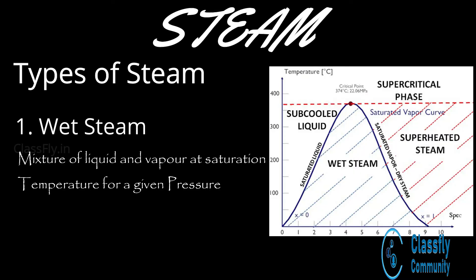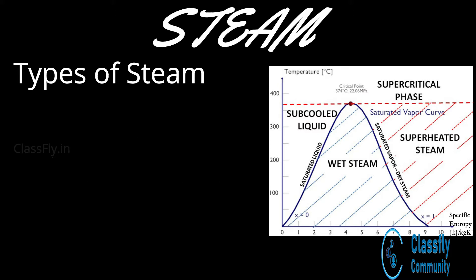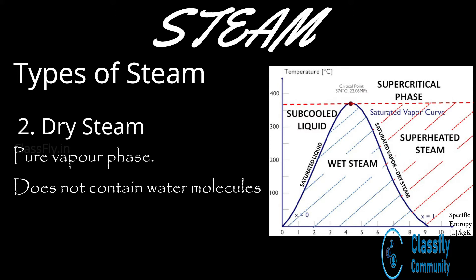Moving on to the types of steam. First, we have wet steam. Wet steam is a mixture which contains both saturated liquid and vapor, formed at a saturation temperature for a given pressure.